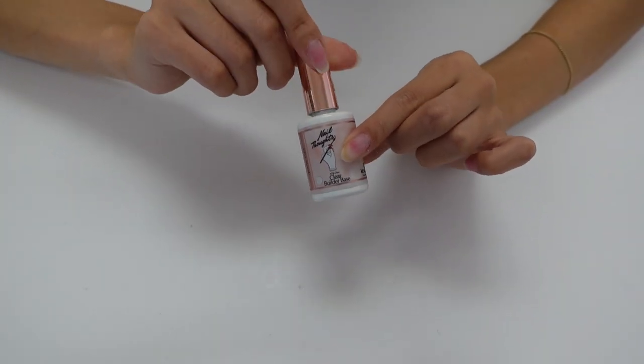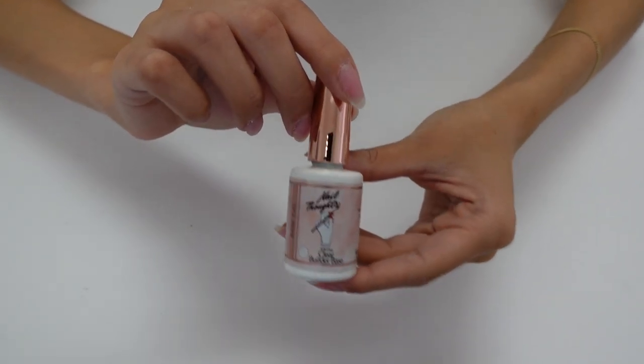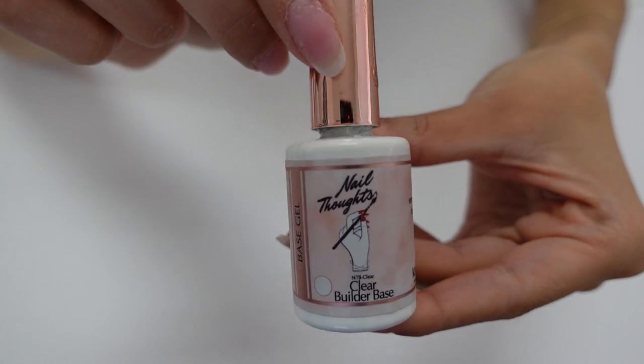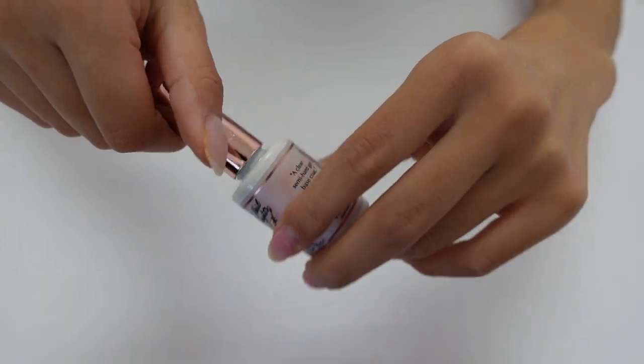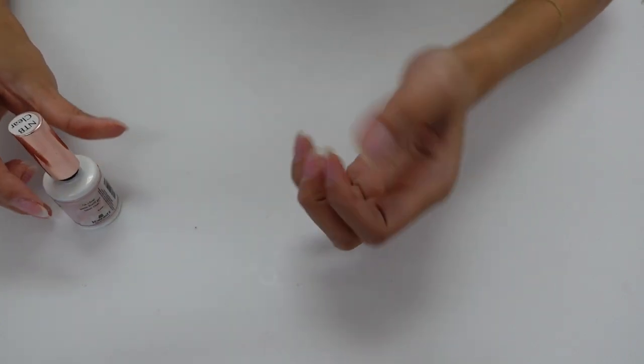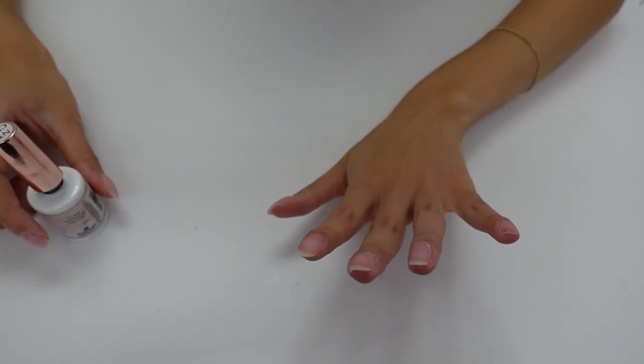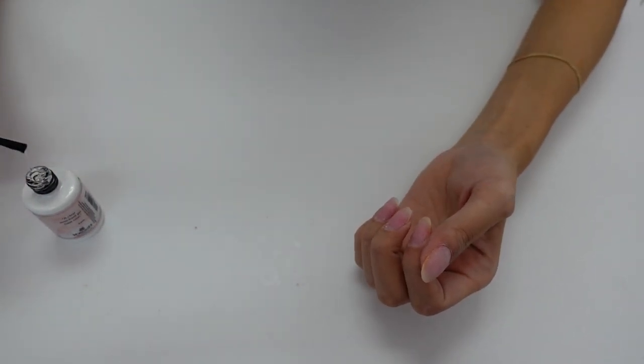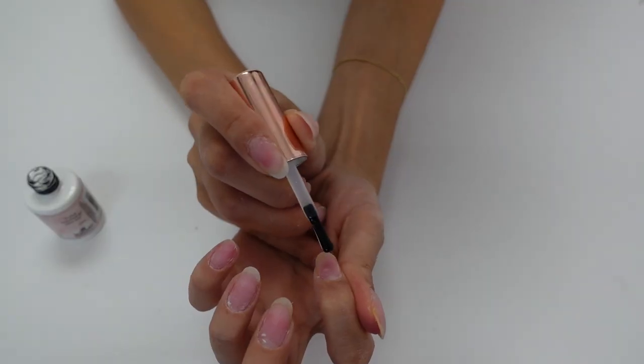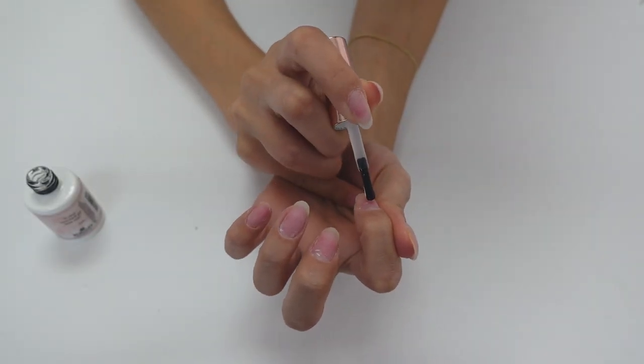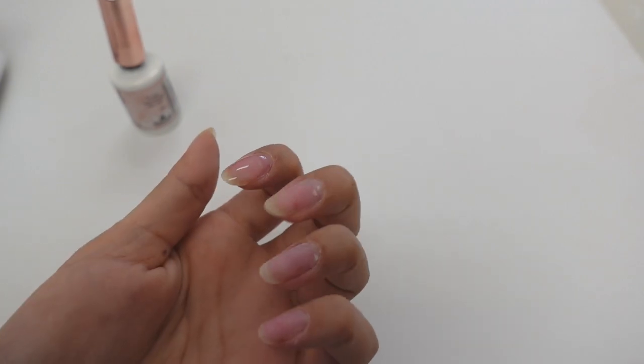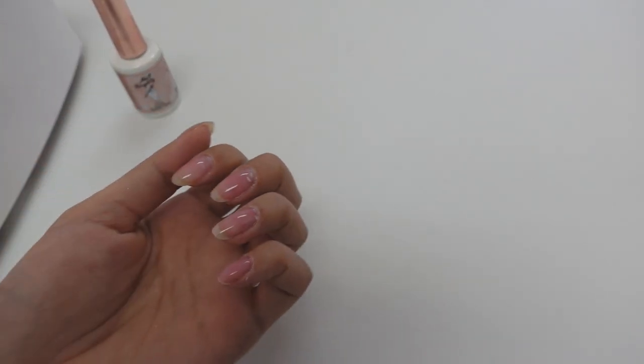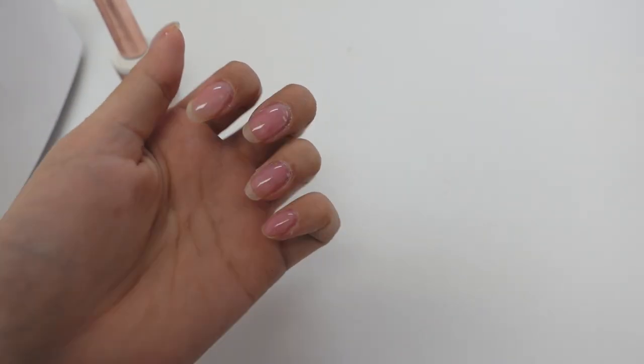After I have thoroughly prepped and wiped down each nail with 90% alcohol, I'm going through with the nail thoughts clear builder base, my tried and true favorite base, personal favorite base. And then I'm just going to apply that to all of my nails, building a little bit of an apex. First, I'm going to go in with a thin layer. One nail done. I'm just going to go through and do the rest of my nails. This is what it looks like after I've applied base to all of my nails.